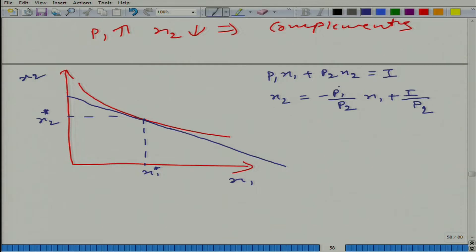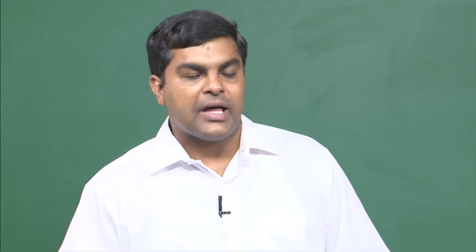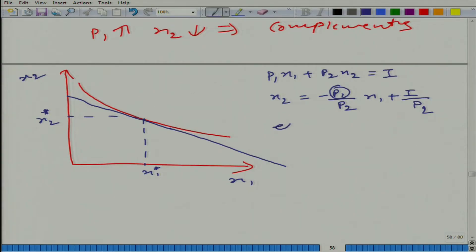So if p1 changes, both the amount of x2 and x1 consumed will change at the optimal level. The key point here is that the effect of change in p1 can be decomposed into two parts, because p1 is playing two roles — and this change in p1 would bring two effects to the optimal consumption bundle.